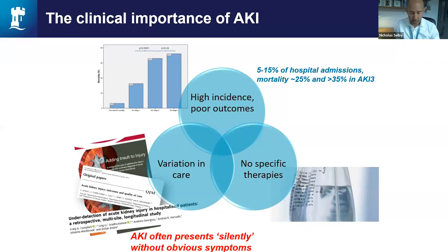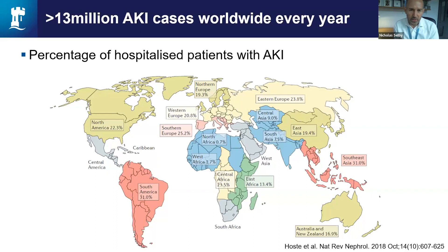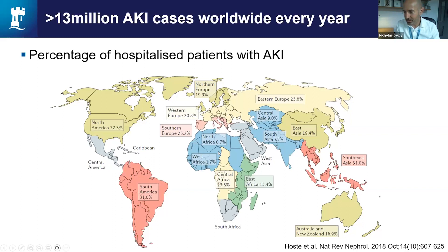But how common is common? Even conservative estimates put the global burden of AKI at greater than three million patients affected every year across the globe. The map shown here shows the percentage of hospitalised patients affected by AKI across different regions of the world. In some areas, such as the north and west of Africa, these low numbers likely reflect issues around testing and access to healthcare, so there may be some reliability questions around some of the figures.